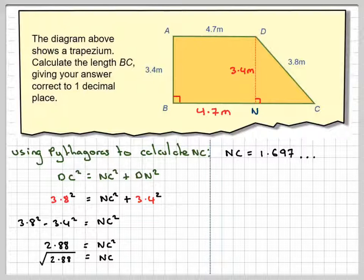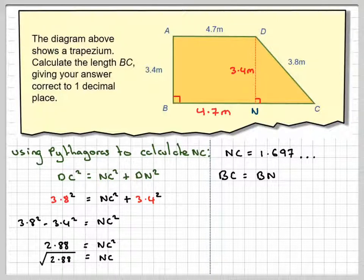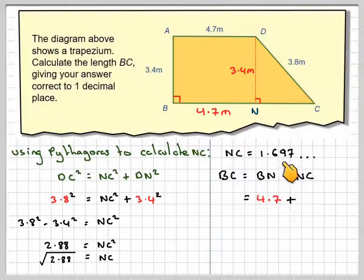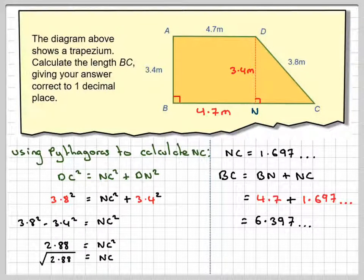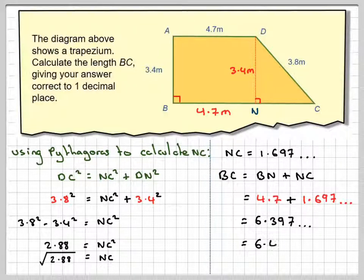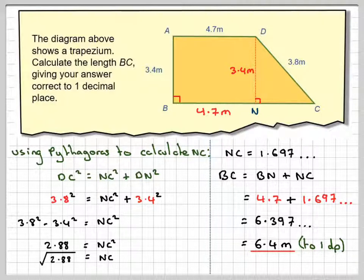In order to find the length of BC, we know it's going to be BN plus NC. BN is 4.7, we get that from here. So it's 4.7 plus 1.697, which gives 6.397. The question says 1 decimal place, so that 9 will make that 3 a 4. So the final answer is 6.4 metres to 1 decimal place.